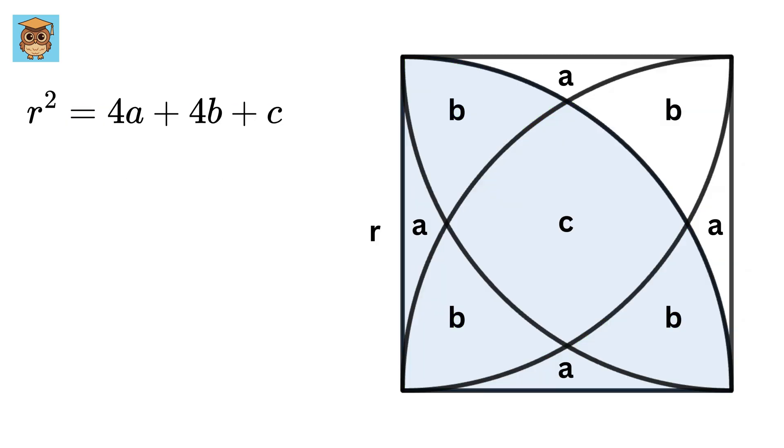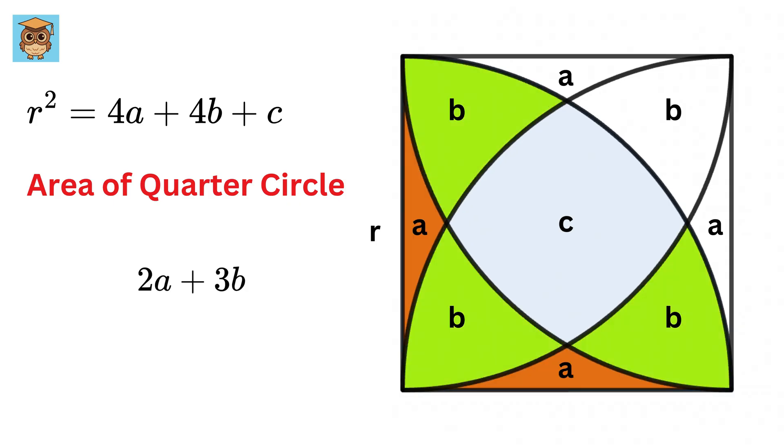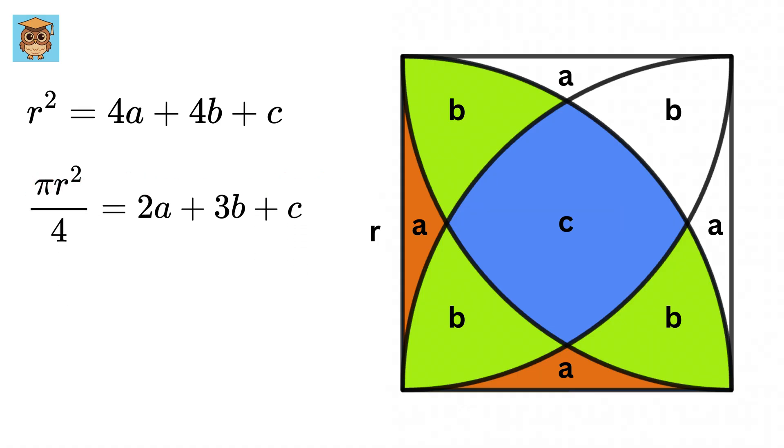Now consider this quarter circle. Its area is equal to 2 times A plus 3 times B plus C. But it is also equal to pi R-square by 4. So this way we now have two equations, but we have three unknowns: A, B, and C. We need one more equation.